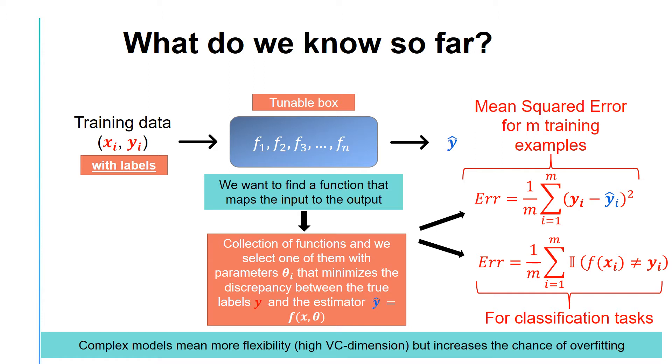On the other hand, a higher VC dimension increases the chance of overfitting. This means that a complex function can represent the training data very well but performs very poorly in terms of generalization or unseen data.